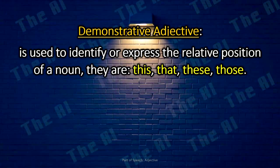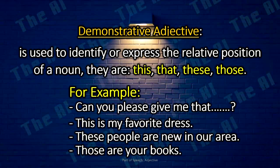Demonstrative adjectives are used to identify or express the relative position of a noun. They are: this, that, these, those. The demonstrative adjective in a sentence comes just before a noun or pronoun and tells you which one it is specifically modifying. For example: Can you please give me that red color pen? This is my favorite dress. These people are new in our area. Those are your books.